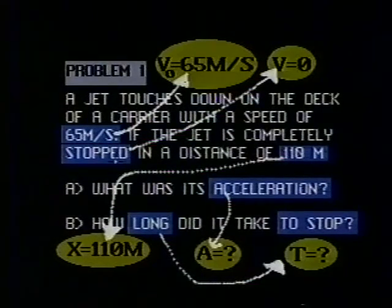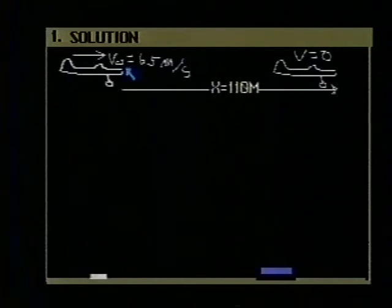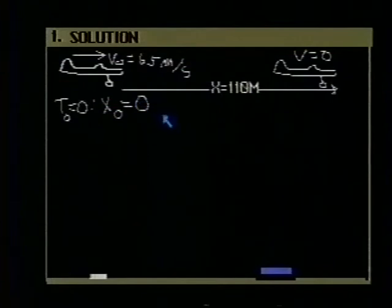All right, let's take a crack at solving the problem now. Here's our plane landing with an initial velocity of 65 meters per second. Let's claim that at the time it lands, the time then is equal to zero, and also that the origin of our coordinate system coincides with that point so that x0 is equal to zero. The question in the problem is what is the acceleration and how long does it take to stop?